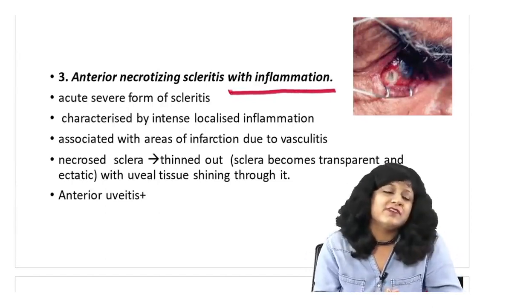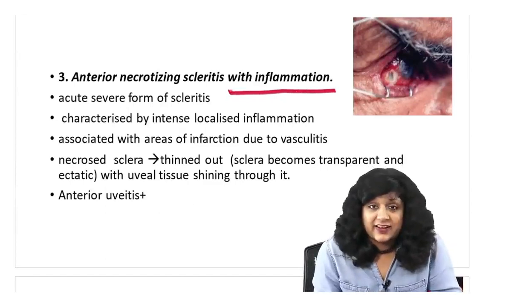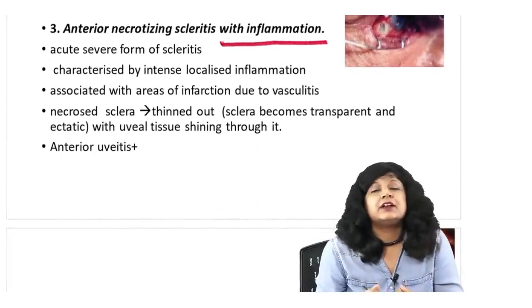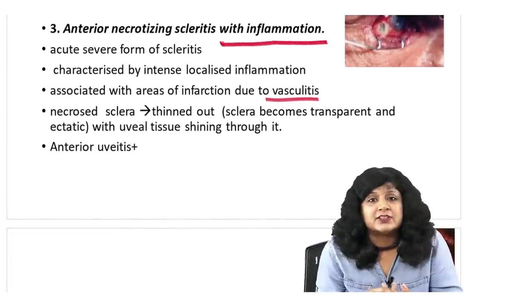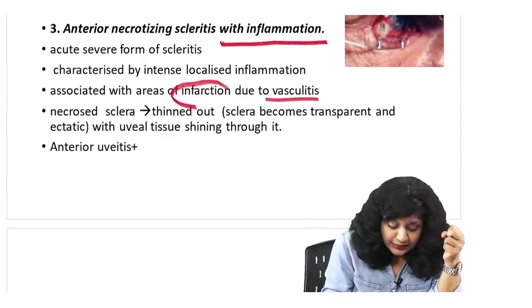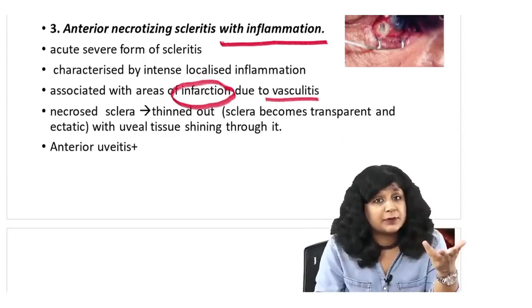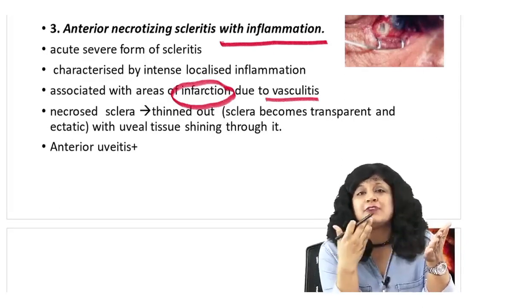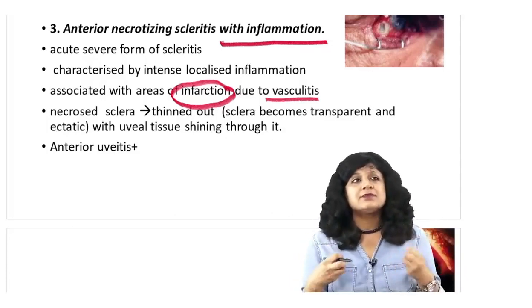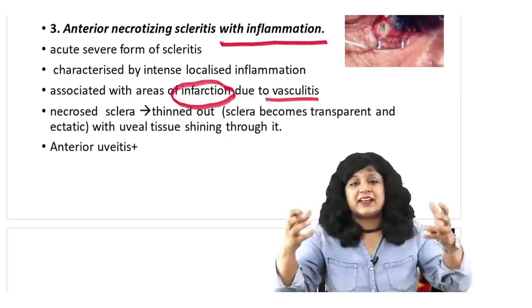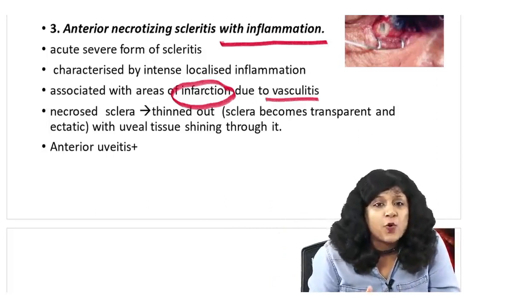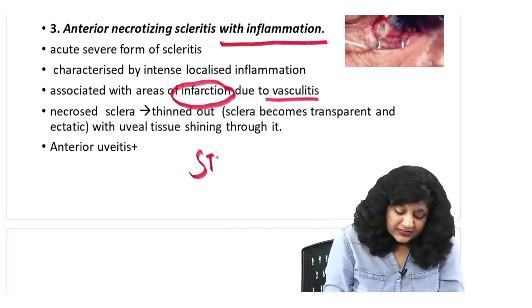Necrotizing scleritis with inflammation is really, really severe — lots of inflammation, lots of ulceration. This area is also characterized by vasculitis, so the vessels are also involved. Because the vessels are also involved, you will have infarction. If there is infarction, there will be an area of necrosis — dead tissue — and therefore thinning. The sclera becomes dead, transparent, and ectatic, and the uveal tissue will start showing through it. This is your staphyloma — necrotizing scleritis can lead to staphyloma.